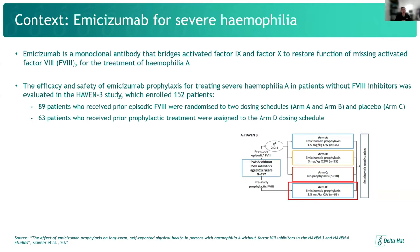This talk focuses on two studies, both concerning emisizumab prophylaxis for treating severe haemophilia A. The first, HAVEN3, enrolled 152 patients split across two groups. The first group, previously treated with episodic factor VIII, were randomized to Arms A, B, and C. The remaining 63 patients, who had all previously received prophylactic treatment, were assigned to Arm D directly. It is Arm D that we're particularly interested in, because unlike Arms A, B, and C, we have no information on their utility.